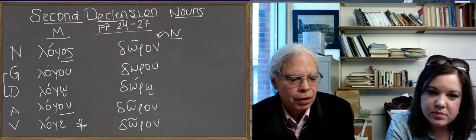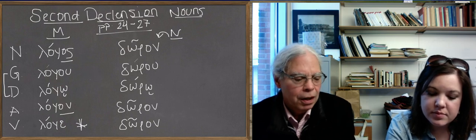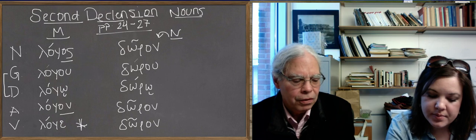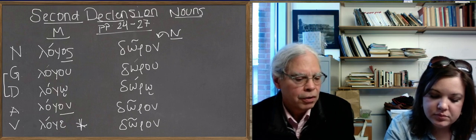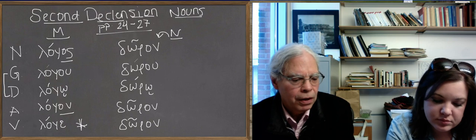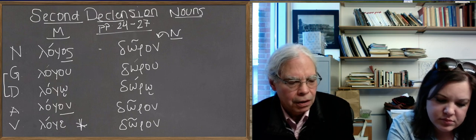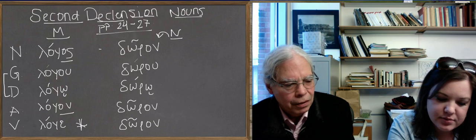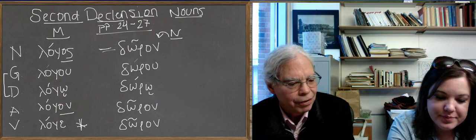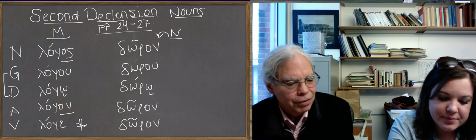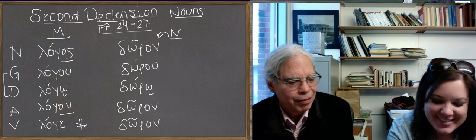Let's look at the forms of doron quickly. The important thing is, and this is true of all neuter nouns in Greek, not just second declension neuter nouns, the nominative and the accusative of them are identical.